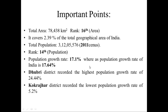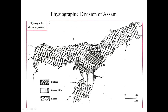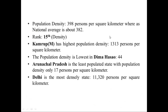The population growth rate in Assam is 17.1%, which is less than the national average of 17.64%. Among the 33 districts, Dhubri district has the highest population growth rate at around 24.44%, and Kokrajhar district has the lowest at 5.2%. Population density means the number of persons per square kilometer. The population density in Assam is 398, slightly above the national average of 382, and Assam ranks 15th. Kamrup Metro has the highest population density at around 1,313 persons per square kilometer.